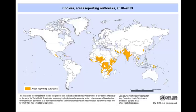A map of cholera outbreaks also shows its location. We can say it's on a few different continents, but pretty much they're in tropical areas along the equator — also areas with lower income, which relates to the epidemiologic transition. We see cholera is endemic to specific geographic areas.